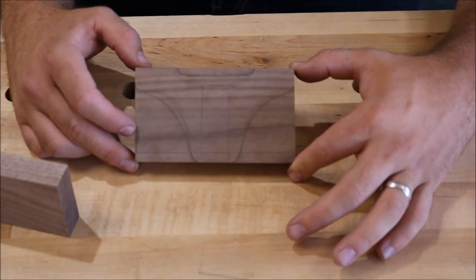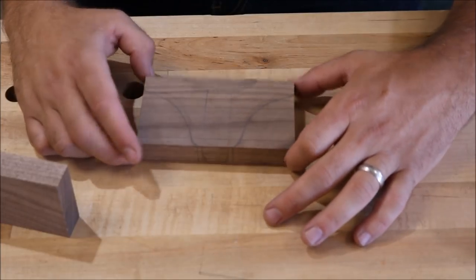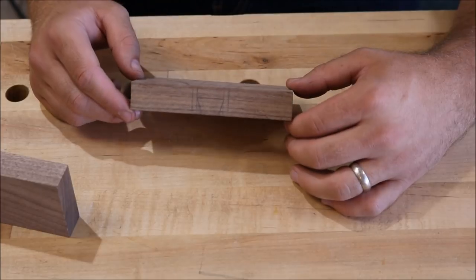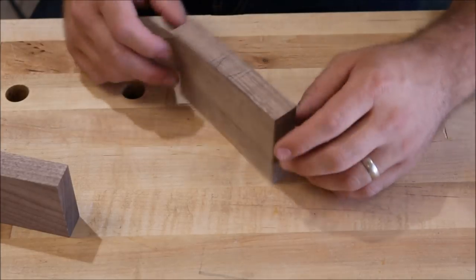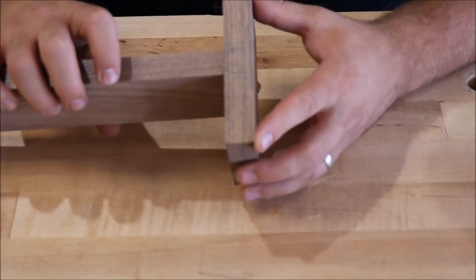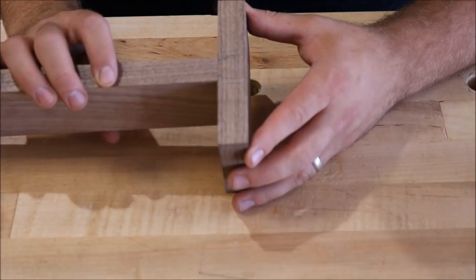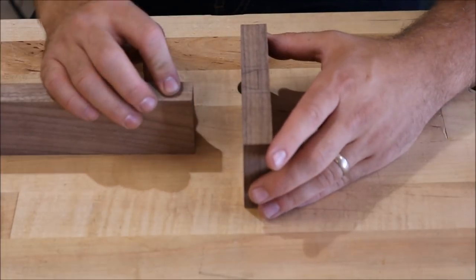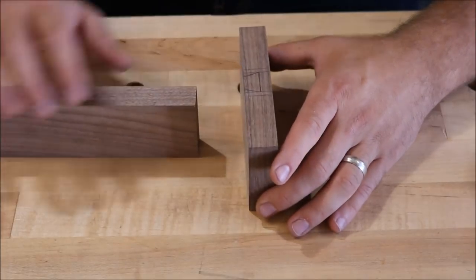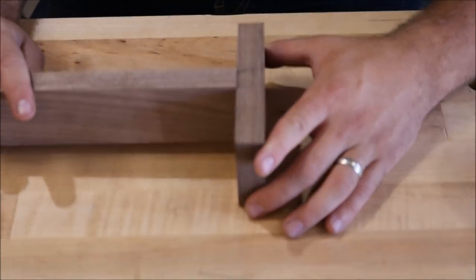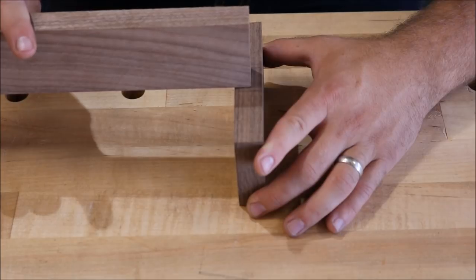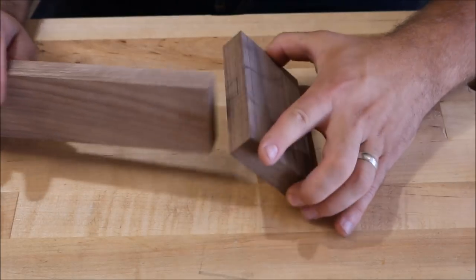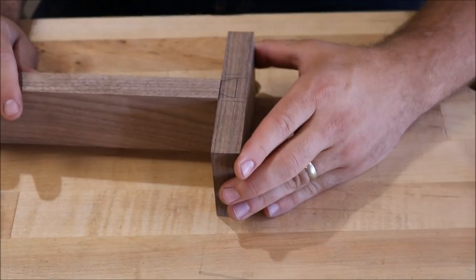So you can kind of see the shape that I'm thinking about going with. I'm going to cut the, it's going to be a sliding dovetail. This rail will be joined like that. So this will have the male side of the dovetail and this will be the female side. So I'll cut the male first. When I have that cut I can set it on there to trace its outline. So yeah let's get started on that.